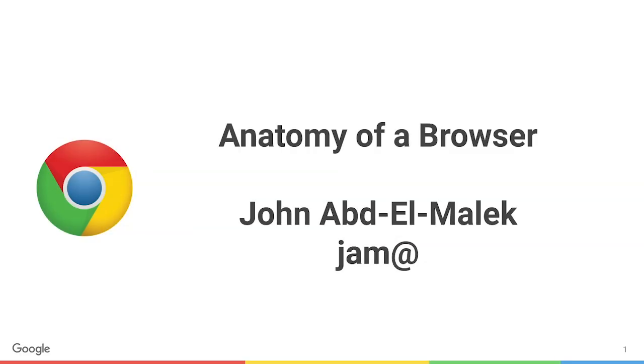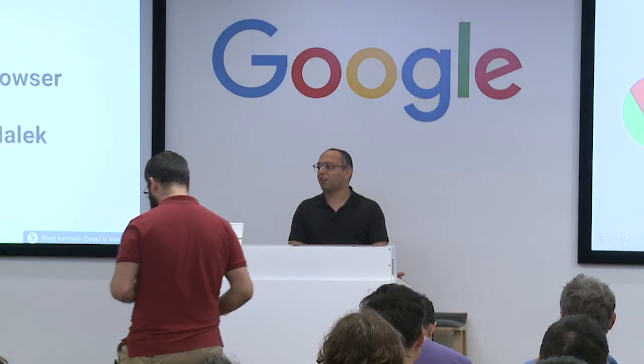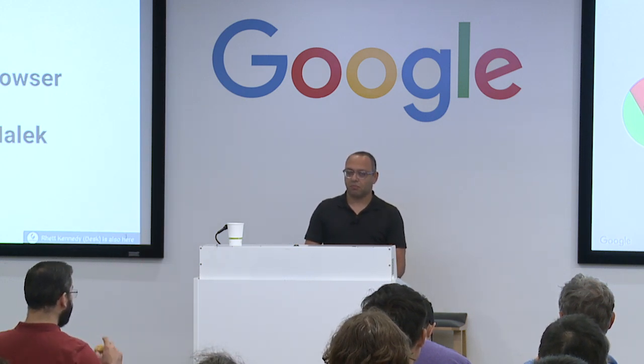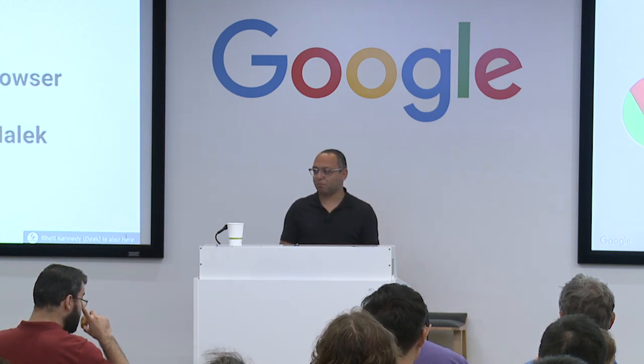Thanks everyone. My name is John Abdul-Malik. I've been on Chrome for about 12 years, and I'm here to talk about the internals of Chrome. My purpose of this talk is to give a background of why you see the various layers in the code. Why is all this complexity there?